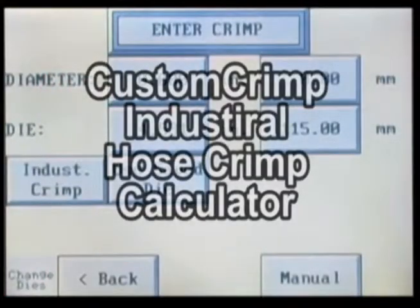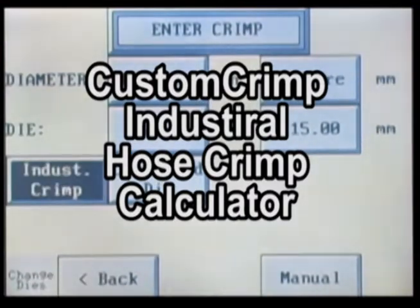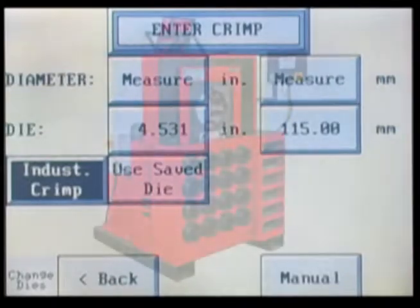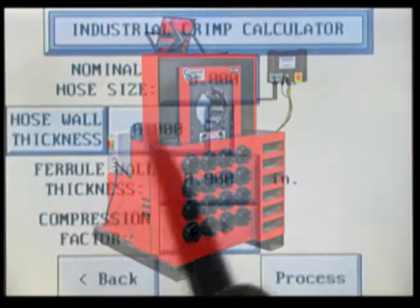Let's look first at the Industrial Hose Crimp Calculator. The Industrial Hose Crimp Calculator software is included on all Custom Crimp crimpers capable of crimping industrial hoses.